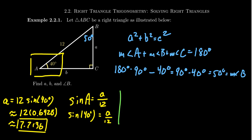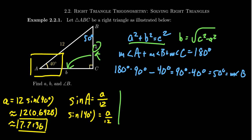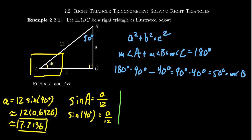That gives us side a. To find side b, you could use the Pythagorean equation — b = √(c² − a²). However, I don't advise that approach, because if a is an approximation, any rounding error will compound when calculating b. It's best to use the original given measurements as much as possible.